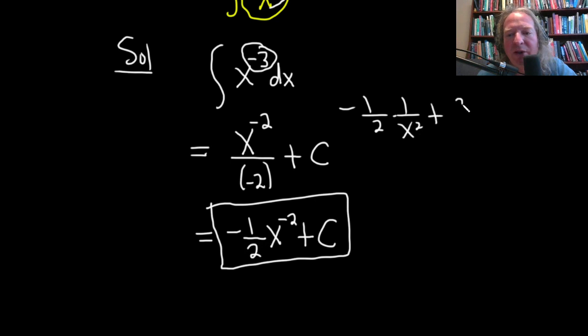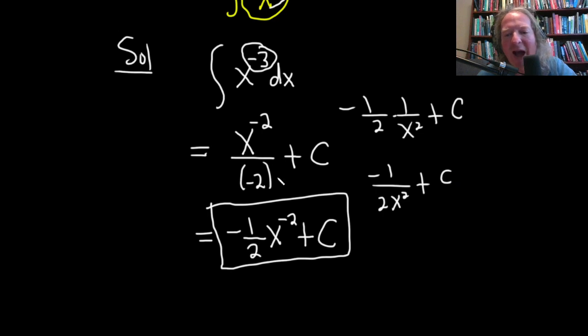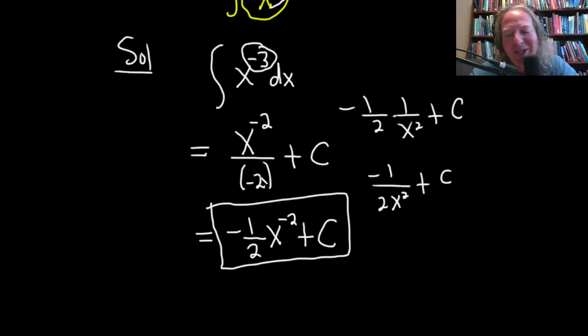Some people might prefer to rewrite it differently — you could move the x to the denominator — but I prefer to leave it as negative 1/2 x to the negative 2. That's the easiest way, in my opinion.